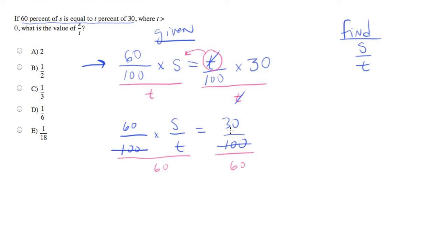And if we do a little simplification, 30 and 60 becomes 1 over 2. The new equation is s over t equals 1 half, which is one of our answer choices, that is B.